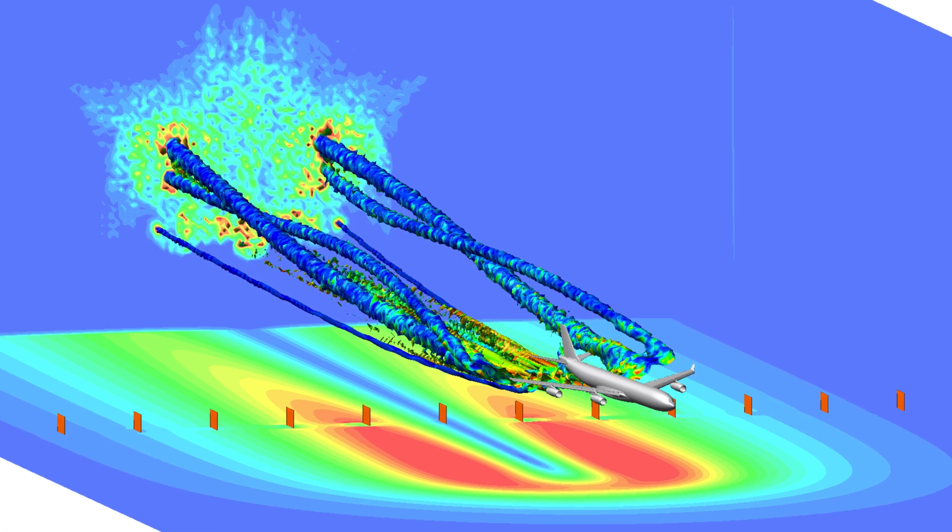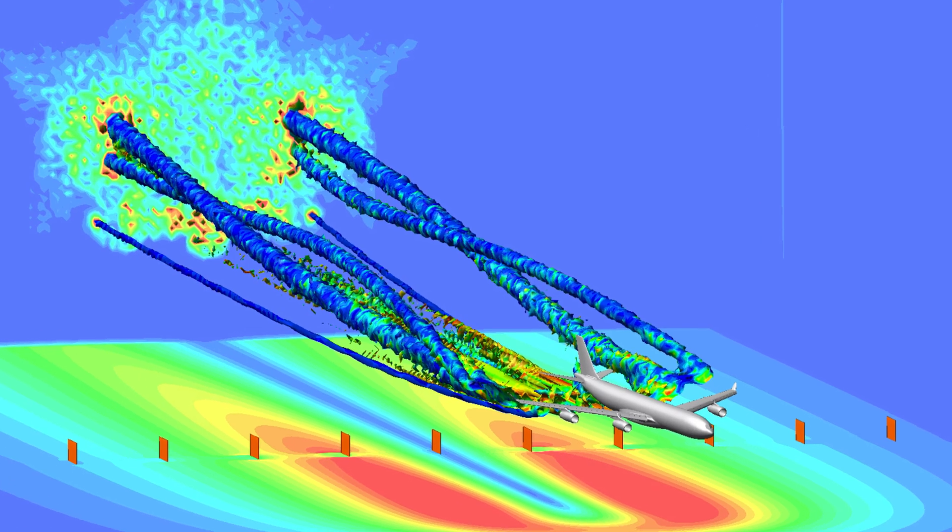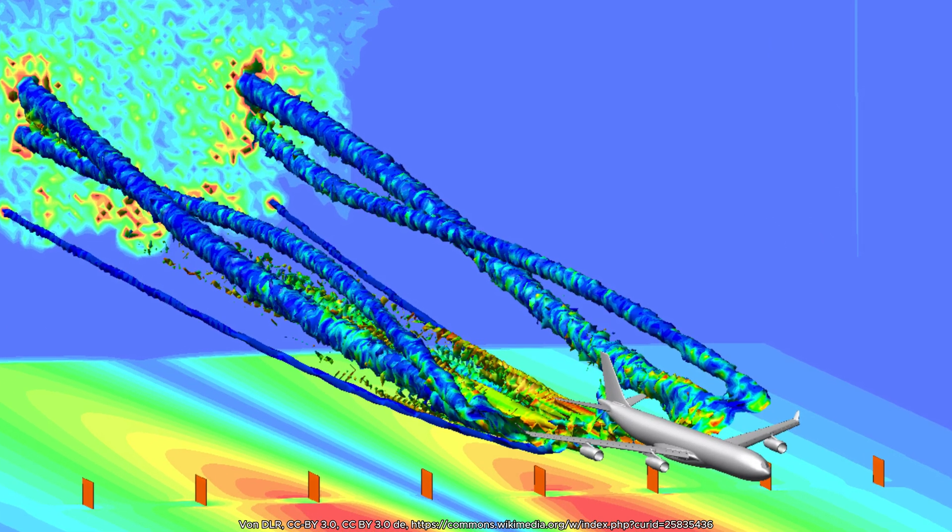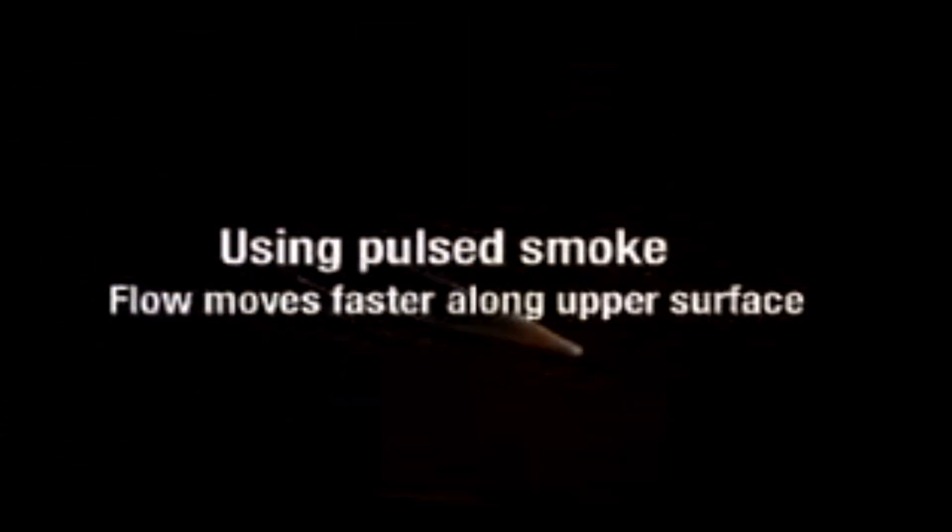However, the conservation of mass adds significant complexity to aerodynamic analysis. For instance, a change in gas velocity in one direction inherently alters its velocity in a perpendicular direction.